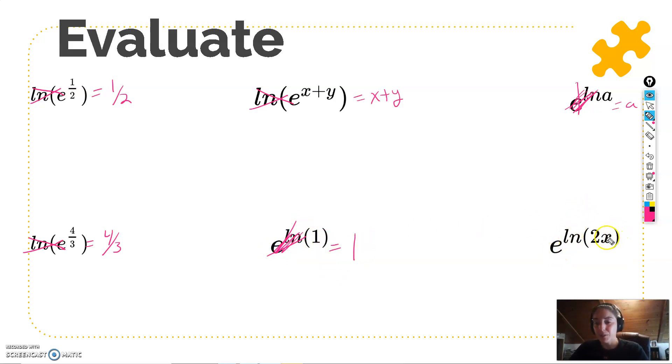What about e to the ln of 2x? Inverse pair again. Cancel. So that'll just leave me with 2x. So the moral of the story here is any time you take the ln of e, it cancels, and any time you take e to the ln, it's also going to cancel because of inverse functions.